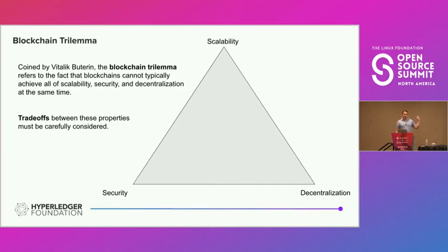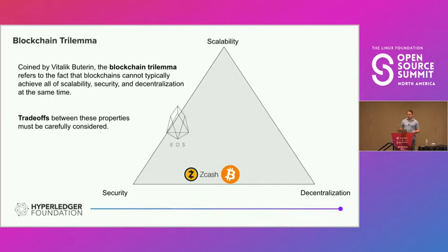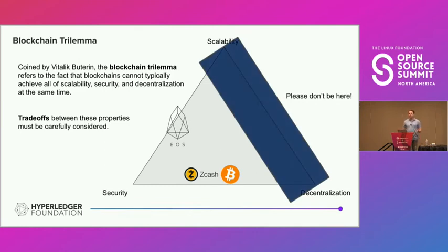This gets to the blockchain trilemma — it's very difficult for blockchains to achieve performance, security, and decentralization all at the same time. Things like Bitcoin and Zcash are very decentralized and security focused, whereas something like EOS trades some decentralization for scalability. If you're working on blockchain, please don't sacrifice security. Choose your trade-off between performance and decentralization.